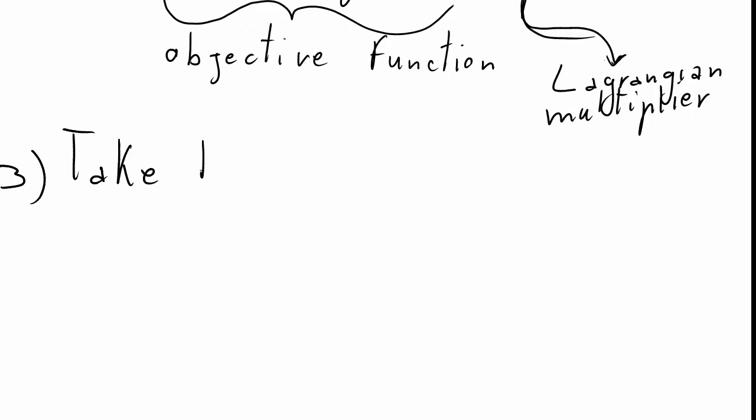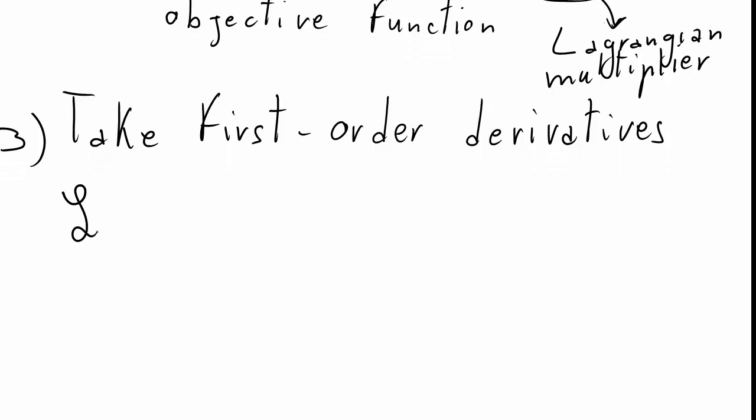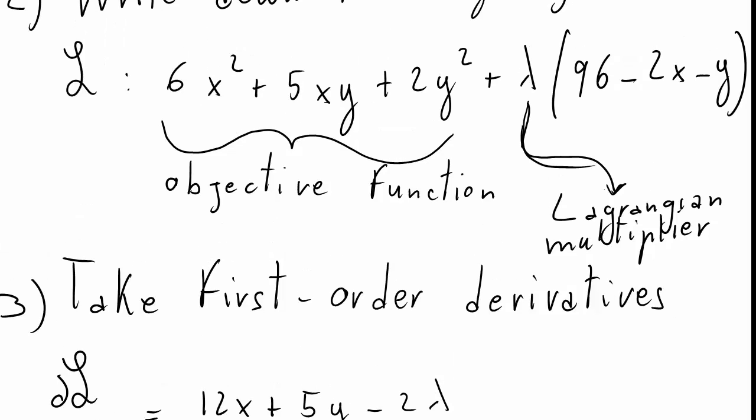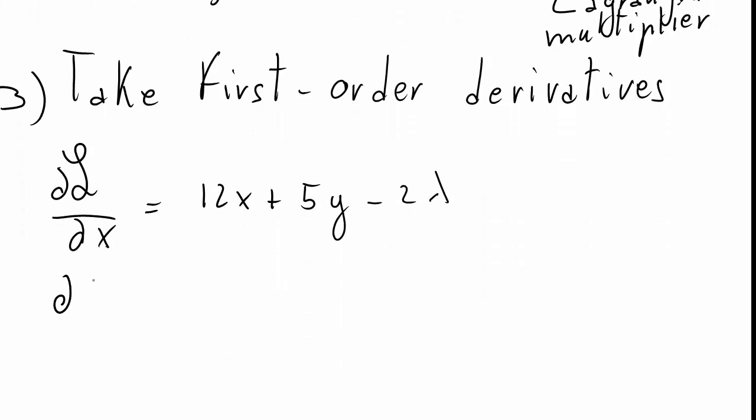Now we can find this at the third step. In the third step I take the first order partial derivative of my Lagrangian function with respect to x, y, and lambda. I will have three separate conditions, three separate first order conditions. First let's take the derivative of the Lagrangian with respect to x. This is the result, you can check it by yourself. You can pause this video.